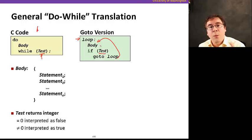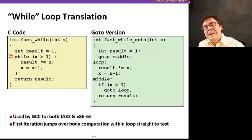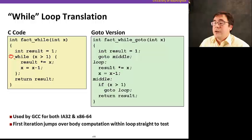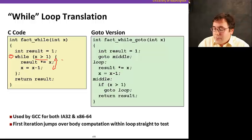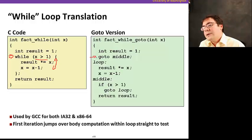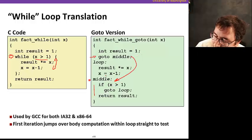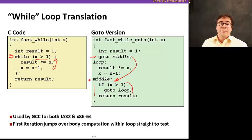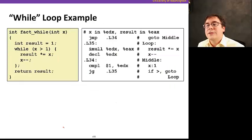Let's see how while loops work — they're slightly different. Note that now we have the while condition at the top. This is no longer a do-while loop. Which means that even for the first iteration, we have to check whether it needs to be executed. So while x is greater than 1, we're going to execute the body of the loop. The biggest difference is this go-to middle. Middle is the middle of the loop — that's where the condition to jump back to the beginning of the loop is evaluated. We jump to the middle before executing the first iteration precisely because we need to evaluate whether even the first iteration needs to be executed. If so, it jumps to loop and keeps going. The first iteration jumps over the loop body because we don't want to execute it unless the expression holds.